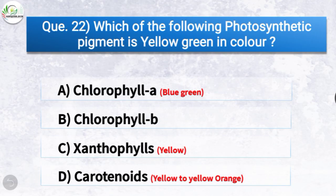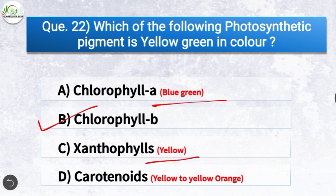Question 22: Which photosynthetic pigment is yellow-green in color? Options: chlorophyll a, chlorophyll b, xanthophylls, or carotenoids. The correct answer is option B — chlorophyll b. Chlorophyll a is blue-green in color, xanthophylls are yellow, and carotenoids are yellow to yellow-orange in color.